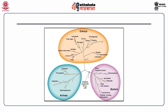The third and most elaborate domain is eukarya, which consists of protists including leishmania, trypanosomes, euglena, diatoms, dinoflagellates, ciliates and forams. It also includes red algae, green algae, land plants, animals and fungi.